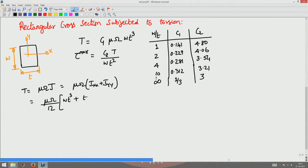This will be the polar moment of inertia for this section. If you pull out w t cubed, by 12 w t cubed you will have 1 plus w by t the whole squared.